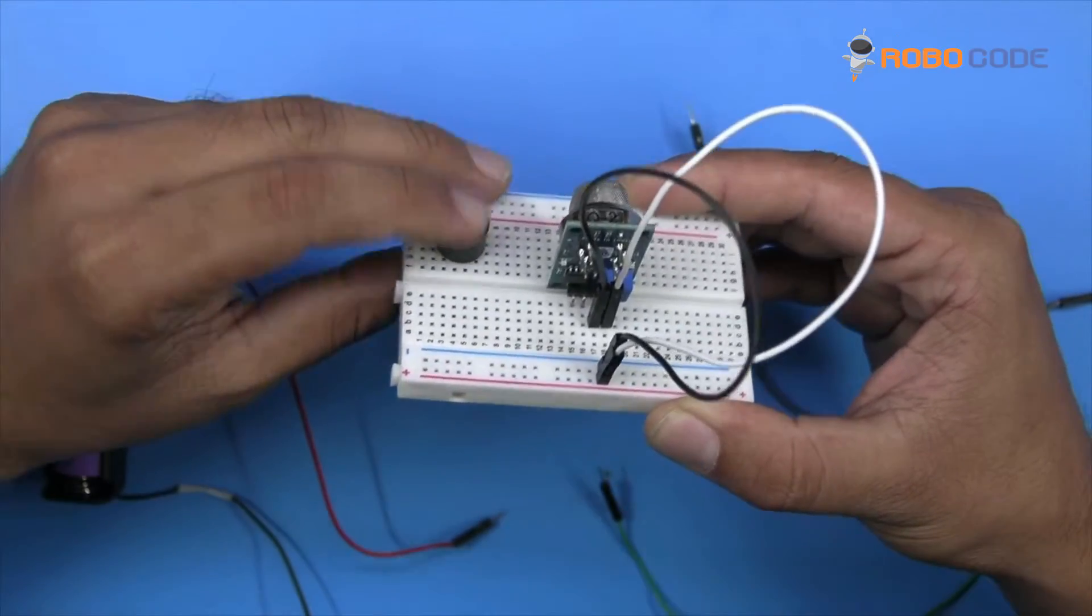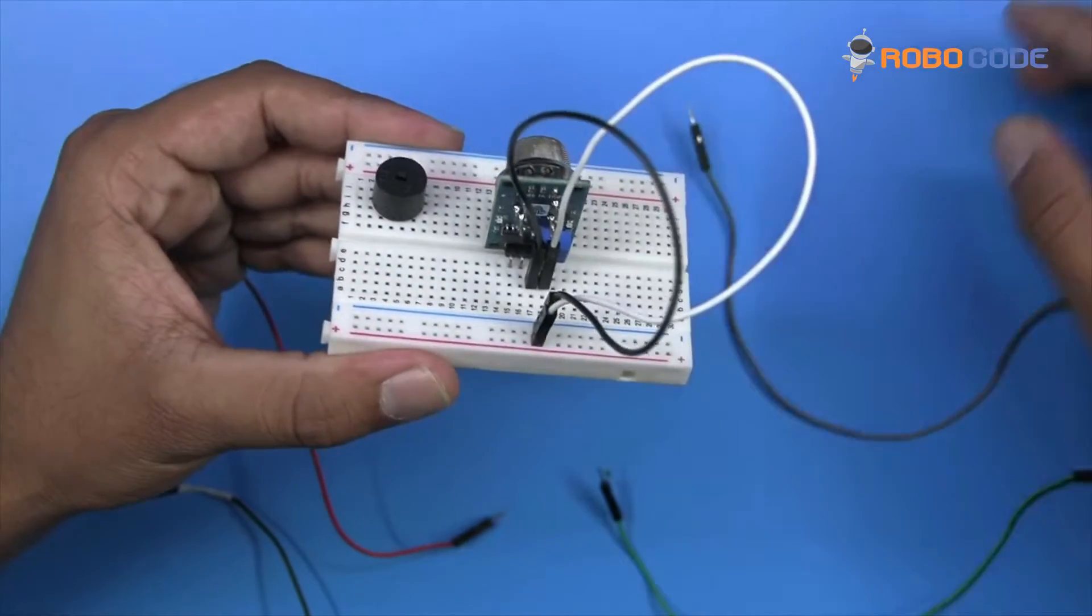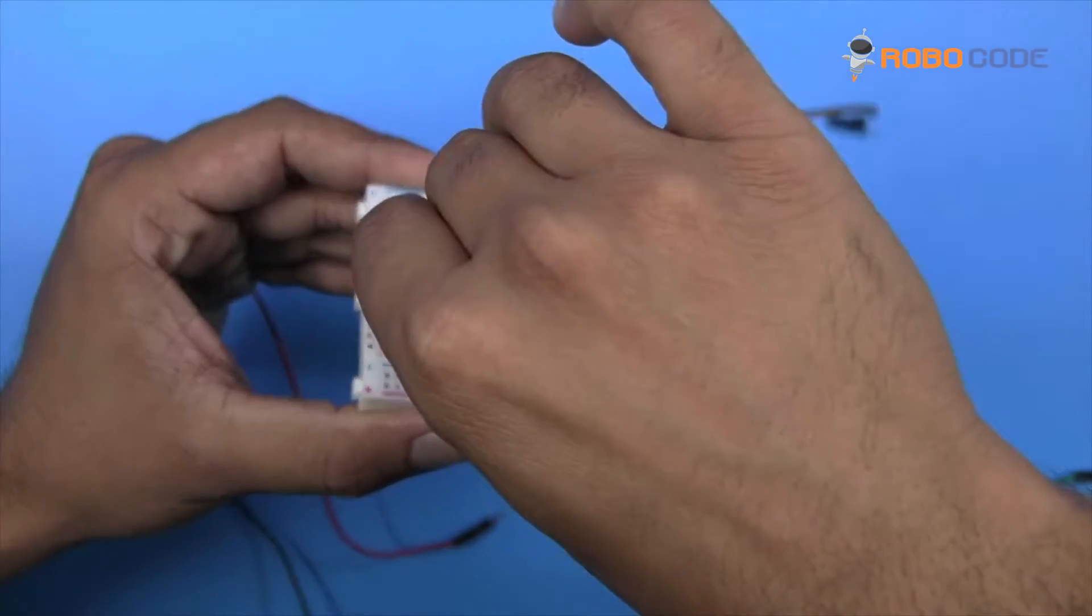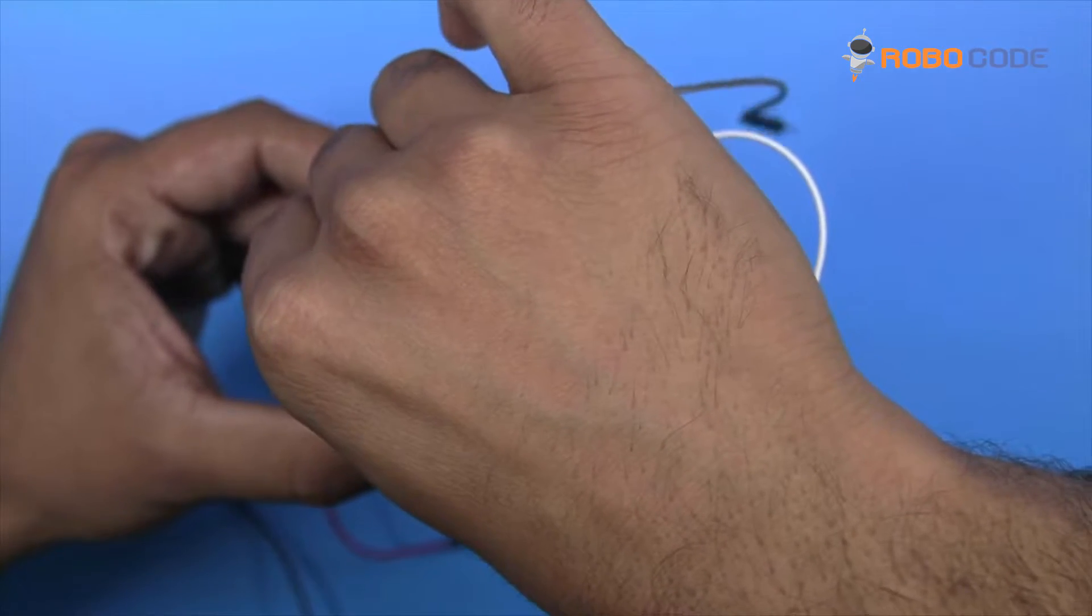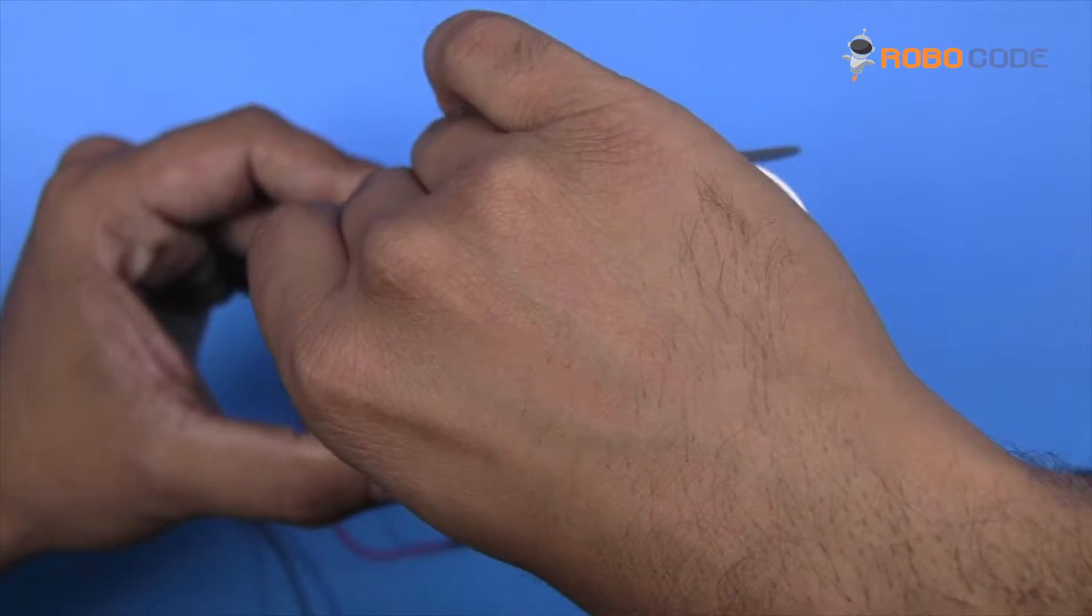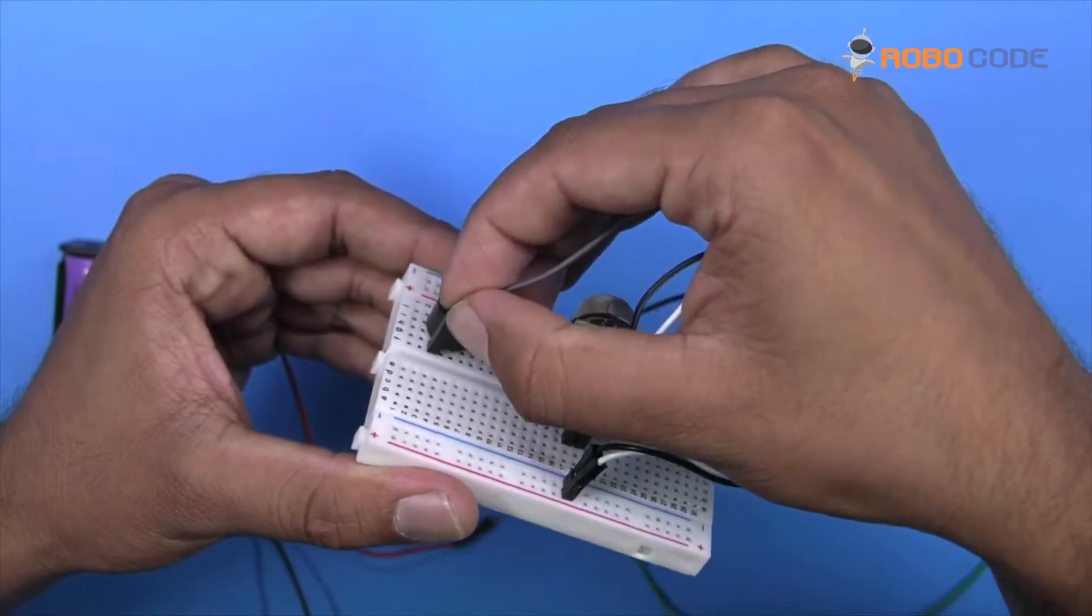Once that is done, take the buzzer and insert it. Now take the gray wire and insert one side of the gray wire right next to the buzzer, at the first pin of the buzzer.